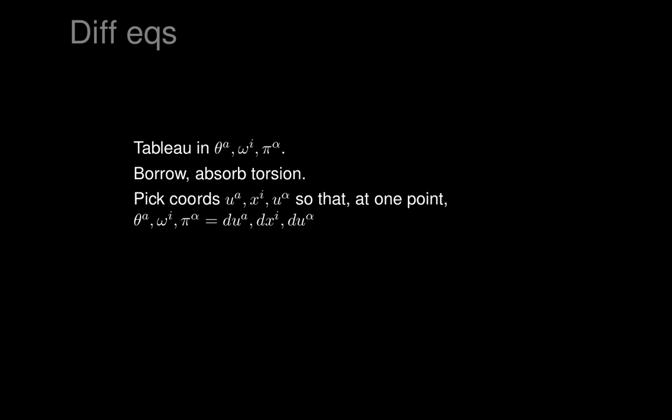What we want to do is make sure that at one particular point the thetas, omegas, and pi's are expressed as du_a's, dx_i's, and du_alphas — just at one point and at one particular integral element at that point. We won't worry about what happens away from that point, but at nearby points they'll have nearby values, and the nearby expressions will have terms that vanish at that point.